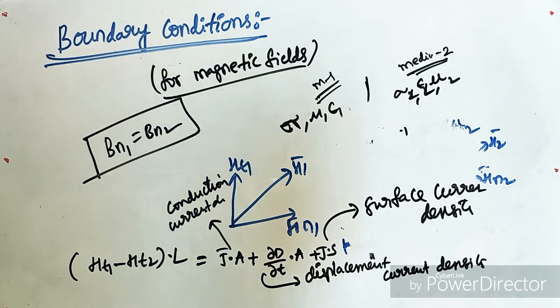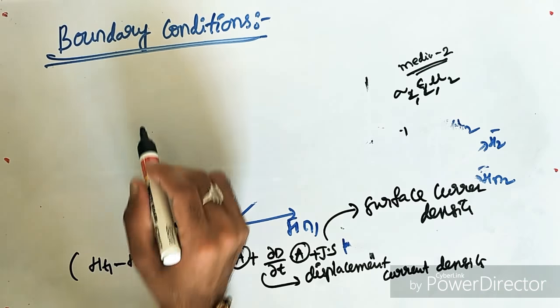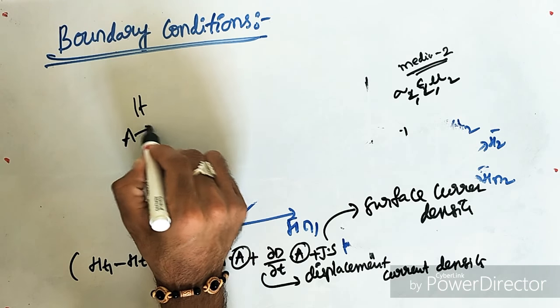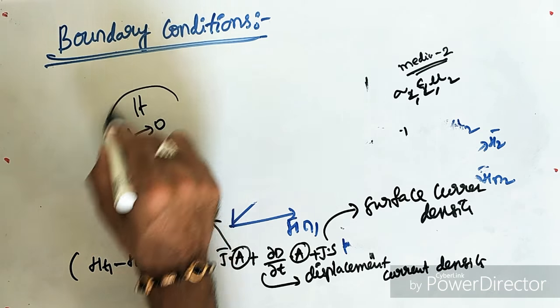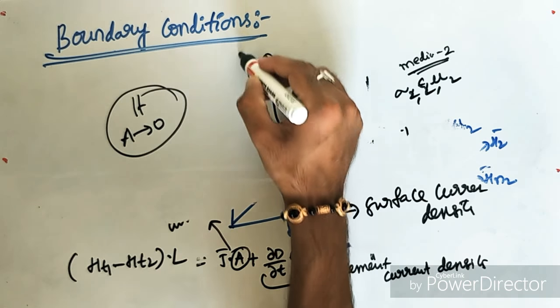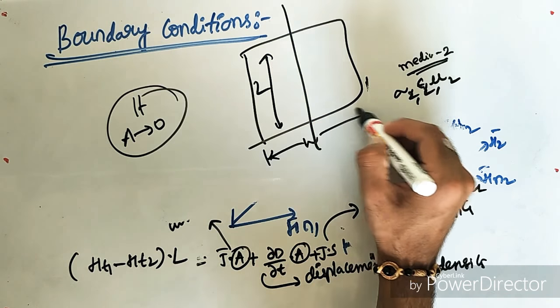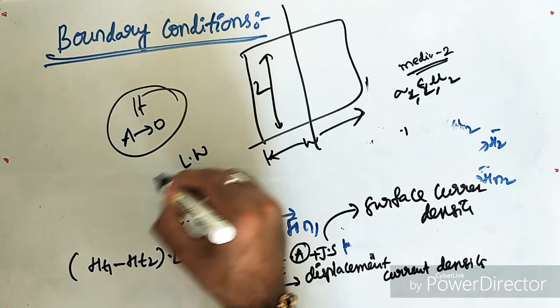We obtain the boundary conditions when the area—we will obtain the boundary conditions when limit area A tends to 0. When area A will be 0 because this is my length of the loop, this is my length of the loop and this is my width. Area of this will be L into W.